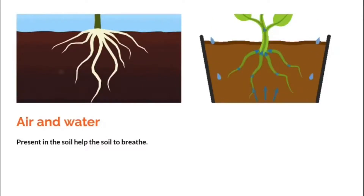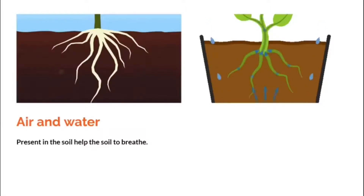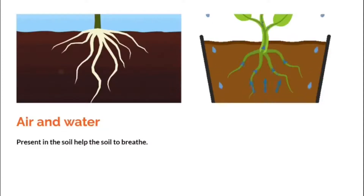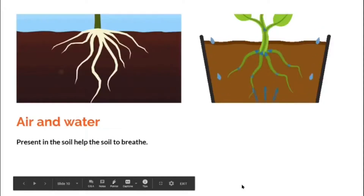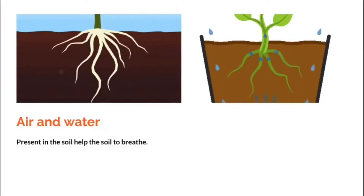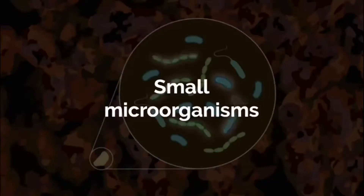Next is air and water — they are present inside the pores of the soil. During the dry season, there is more air in the soil, so the soil dries quickly. Whereas in the wet season, there is more water inside the soil, as the water fills up the air space as well.